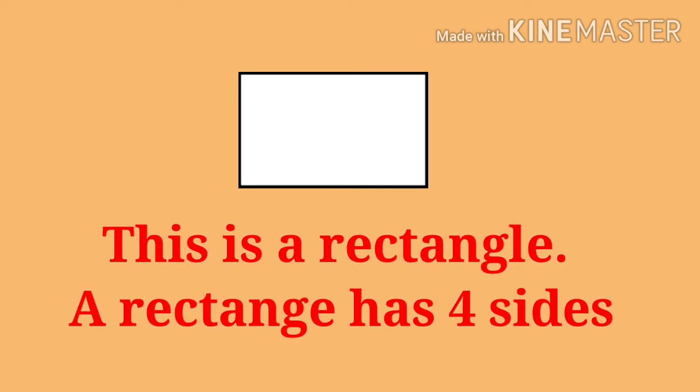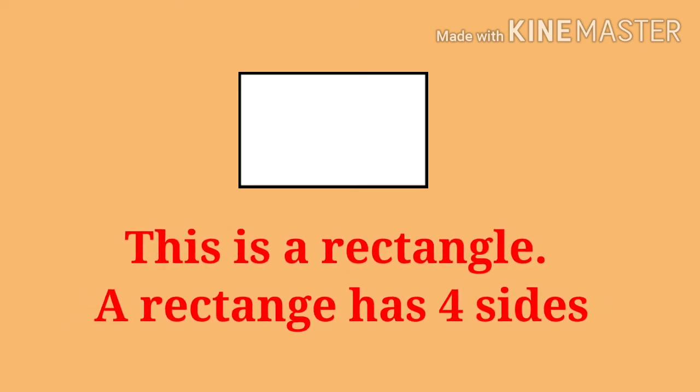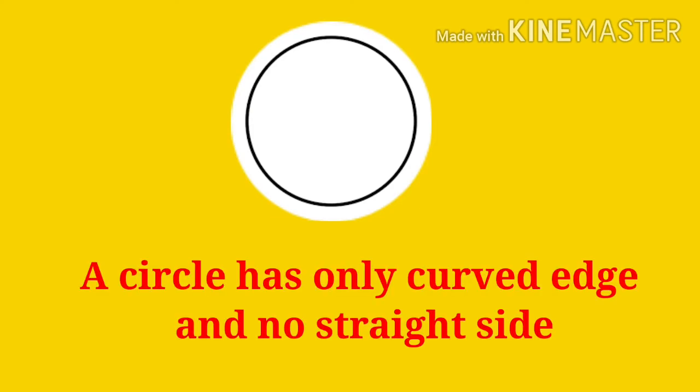What is the name of this figure? Very good! This is a rectangle, and a rectangle has four sides. What is the name of this shape? Very good! This is a circle, and a circle has only a curved edge and no straight line. A rectangle or square has straight lines, but a circle has only curved lines.